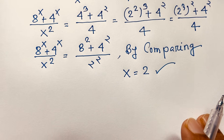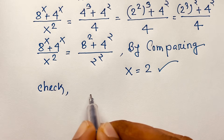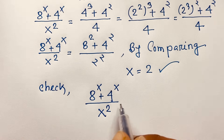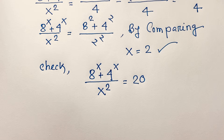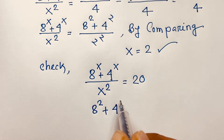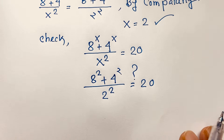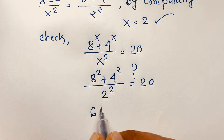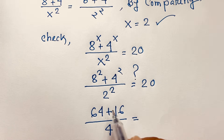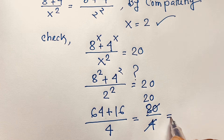Let's verify our answer. The question is 8^x plus 4^x over x squared equals 20. Substituting x equals 2: 8^2 plus 4^2 over 2^2 equals 20. Now 8^2 is 64, 4^2 is 16, so 64 plus 16 is 80, divided by 4 equals 20.